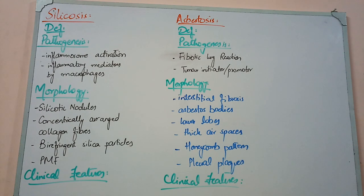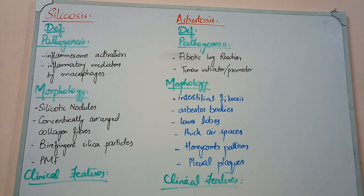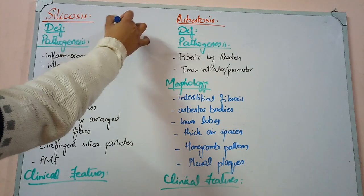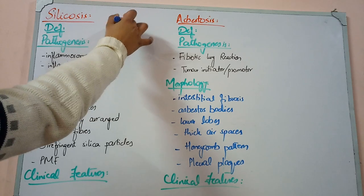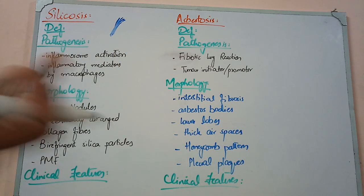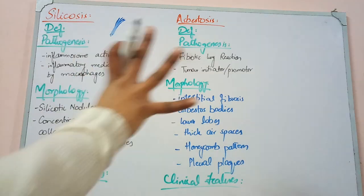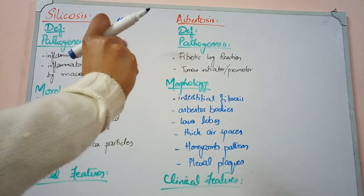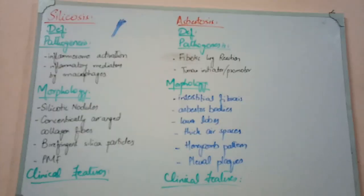The last thing we started was restrictive lung diseases. In restrictive lung disease, you have fibrosis in your lungs. When you have fibrosis, you lose the normal tissue compliance. Normally, lungs are spongy and very easy to expand — they relax when filled with air.